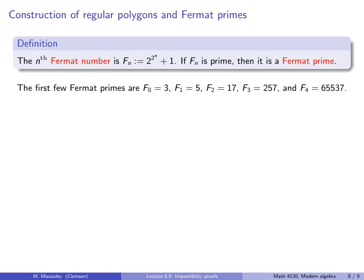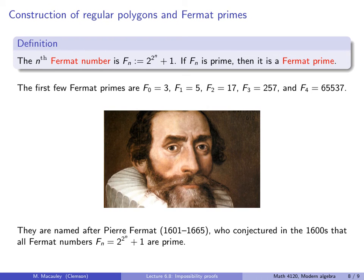It's easy to check that the first few Fermat primes are f0 is 3, 2 to the 2 to the 0 plus 1, f1 is 5, f2 is 17, f3 is 257, and f4 is 65,537. These are named after the 17th century French mathematician Pierre Fermat, who conjectured that all Fermat numbers are prime. Because why not? The first five are. The pattern is obvious, right?